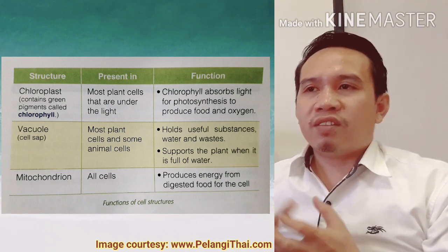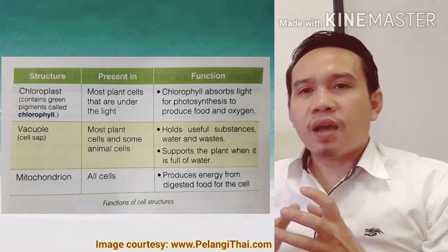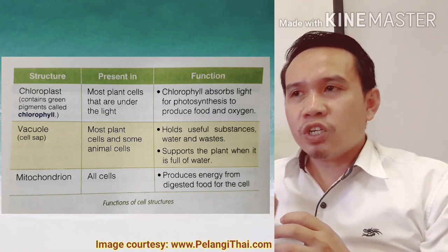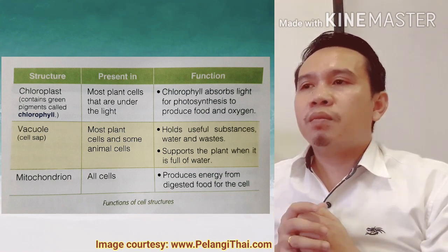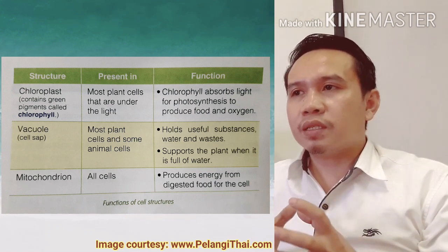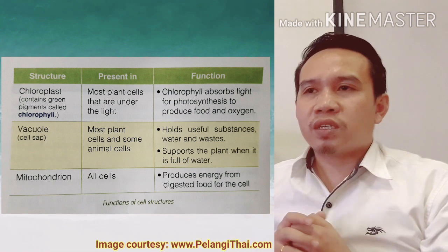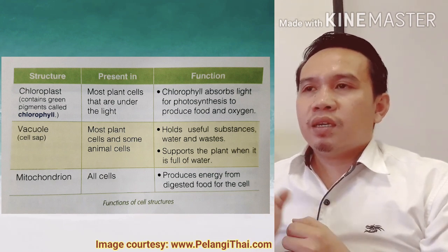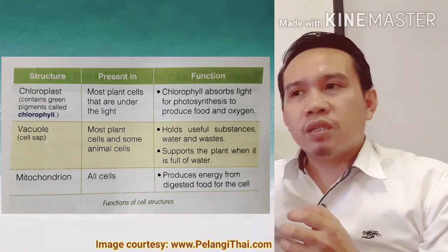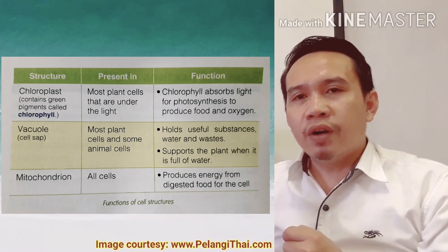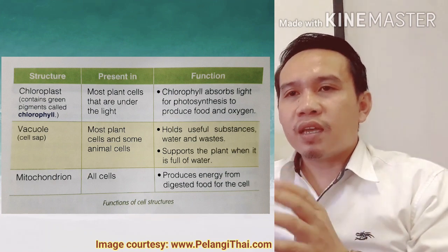The next structure is the vacuole — it is present in most plant cells and some animal cells. The function of the vacuole is to hold useful substances, water, and waste products, and it also supports the plant when it is full of water. The last structure is the mitochondrion, present in all cells. Its function is to produce energy from digested food for the cell.